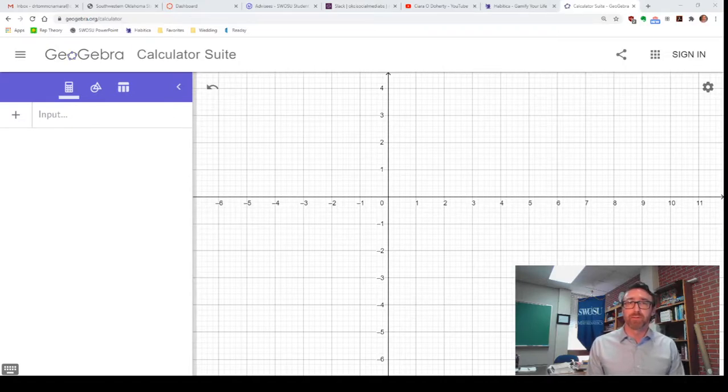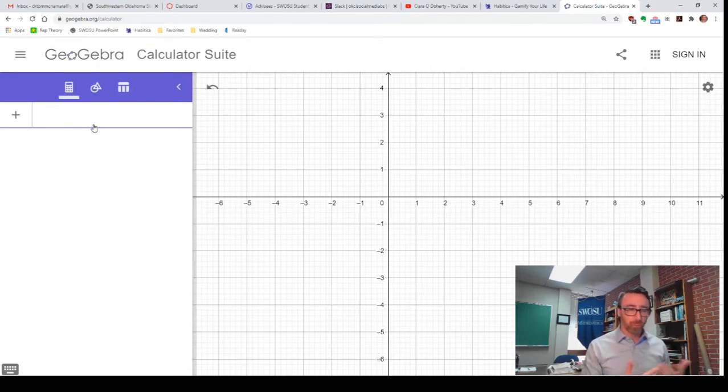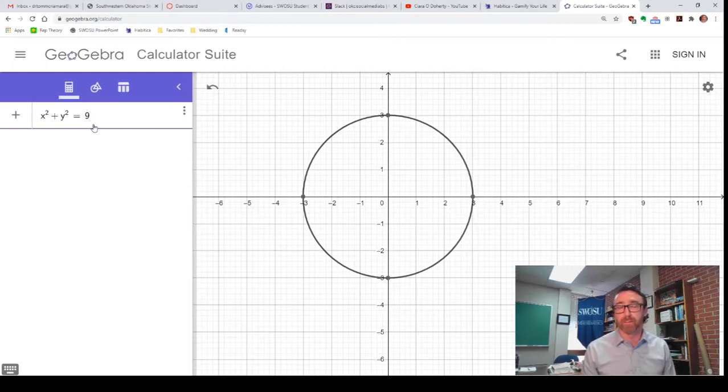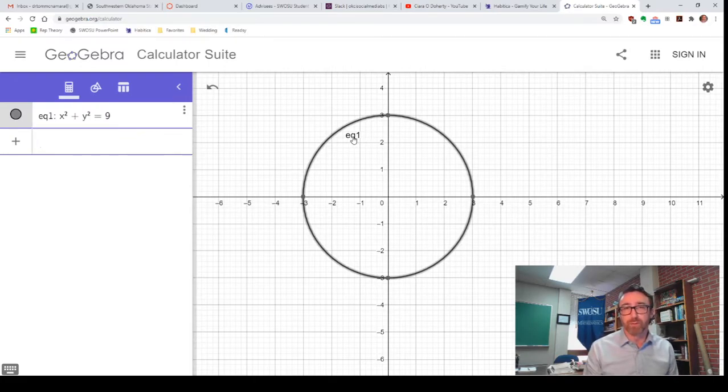In this video I'd like to discuss graphing parametric equations in GeoGebra. Parametric equations give us a wonderful tool for showing how objects move through time. Typically when we are dealing with graphing algebraic equations, we get this curve. Let's say I want to graph x squared plus y squared equals 9. We know from our work in algebra that the graph of this equation will be a circle.